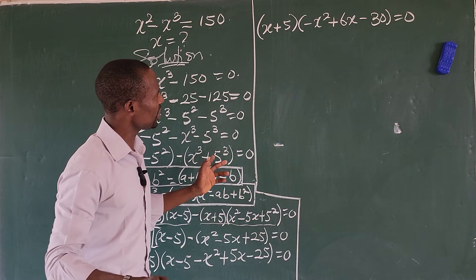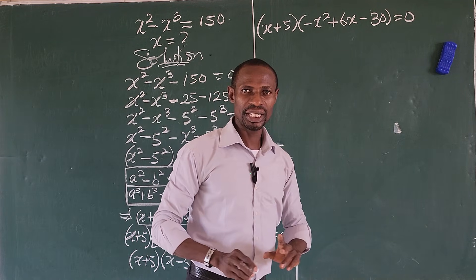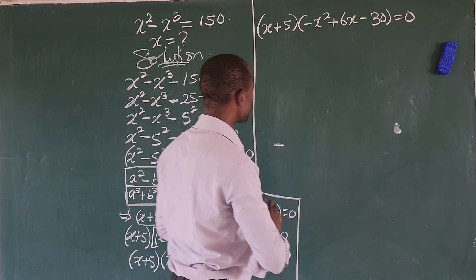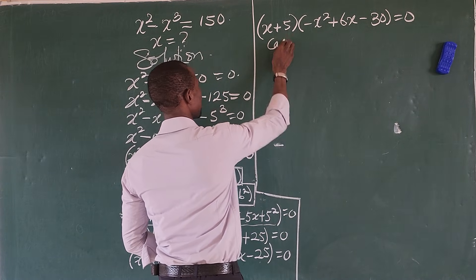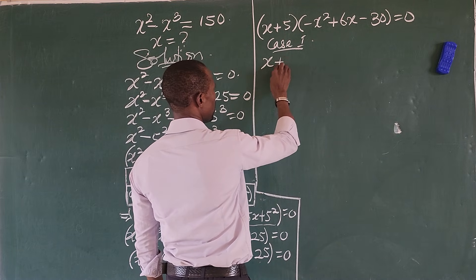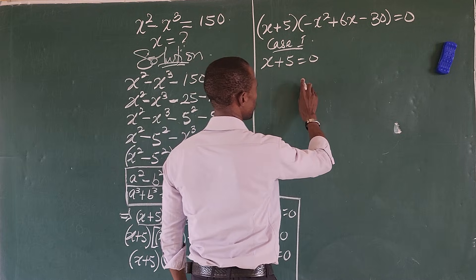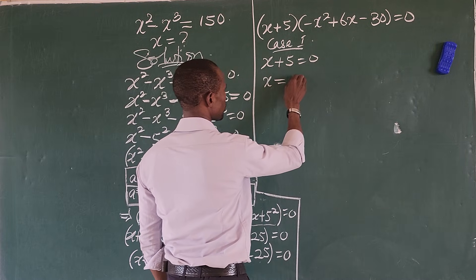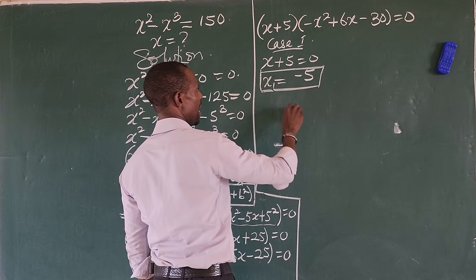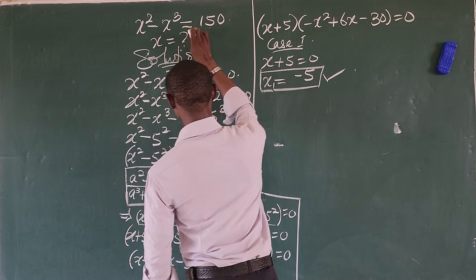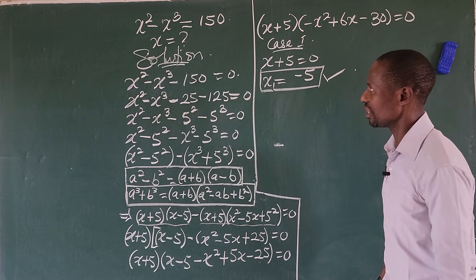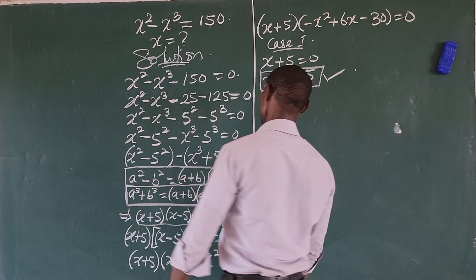Now we apply what we call the zero product rule, whereby we set each factor equal to zero. So doing that gives us Case 1: x plus 5 equals zero, therefore x equals minus 5. That is the value of our x₁, which satisfies this expression.